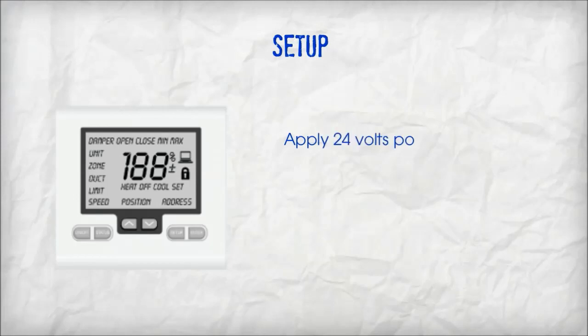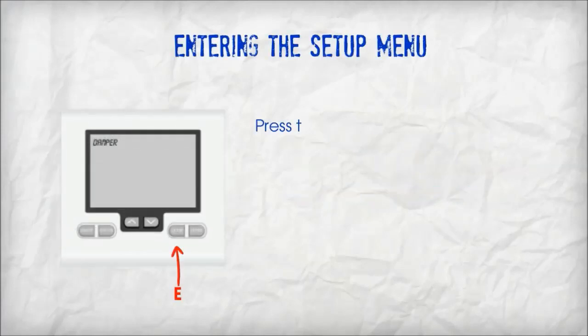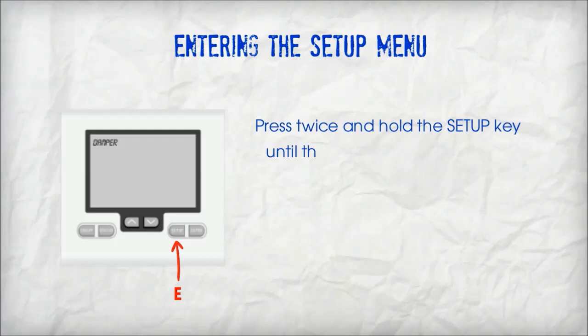Apply 24 volts power to the thermostat. The LCD will momentarily display all icons. To enter the setup menu, press twice and hold the setup key until the word 'damper' appears on the LCD.